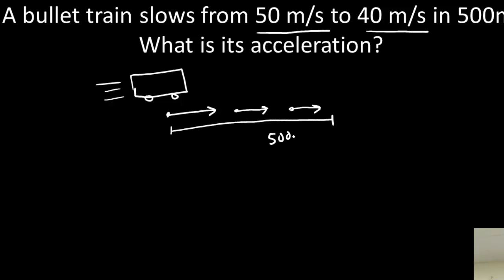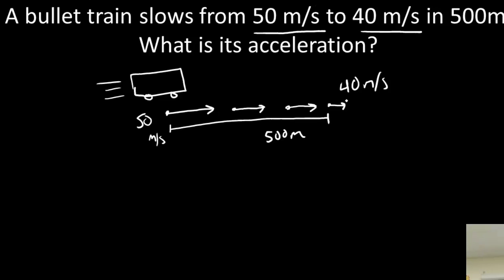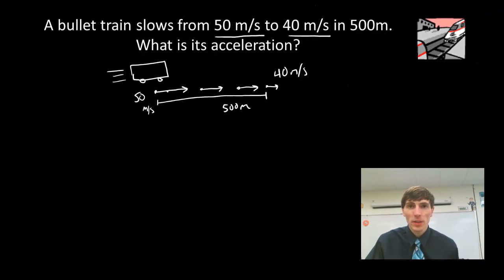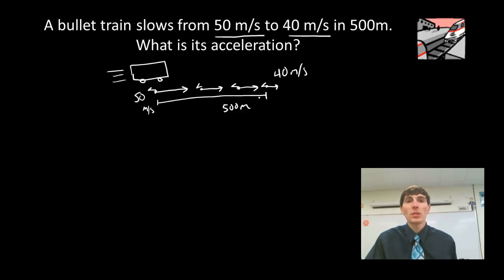It starts out going 50 meters per second, and then after some period of time it gets down to 40 meters per second, over 500 meters. We can see the velocity is numerically decreasing. We're going to assume constant acceleration, so we could draw acceleration vectors on there. Now, how are we going to use KIPA? The first thing we need to do is write out our knowns.